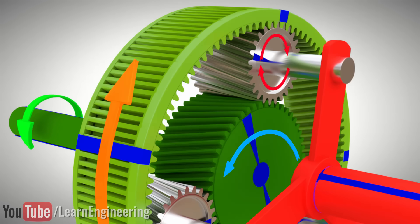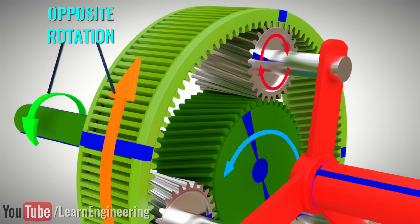This spinning planet gear will make the ring gear rotate in the same direction. In short, the direction of rotation of the ring gear will be the opposite to the sun gear. Thus, we will get the reverse gear.